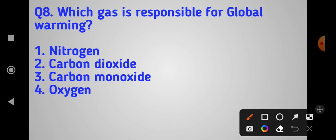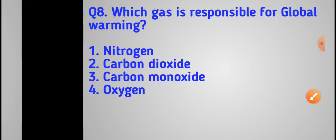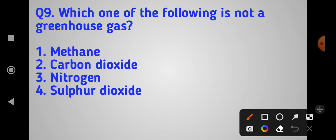Which gas is responsible for global warming? The answer is carbon dioxide, option number two. Carbon dioxide is responsible for global warming and is also a greenhouse gas. Next question: which one of the following is not a greenhouse gas?